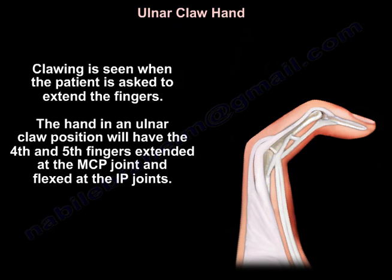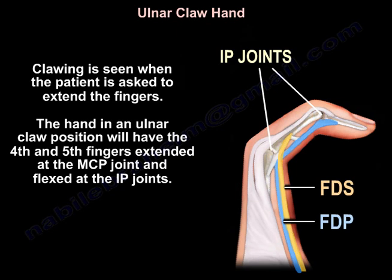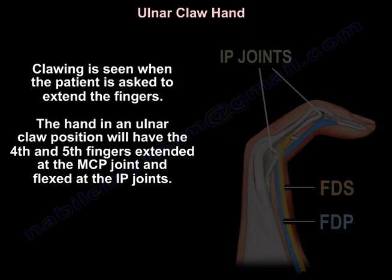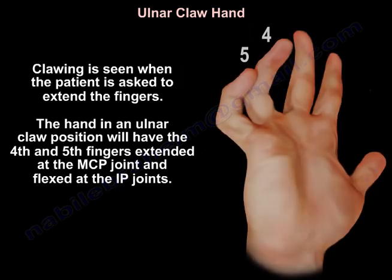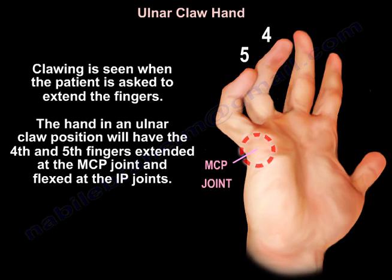Clawing is seen when the patient is asked to extend the fingers. The hand in the ulnar claw position will have the fourth and fifth fingers extended at the metacarpophalangeal joints and flexed at the IP joints.